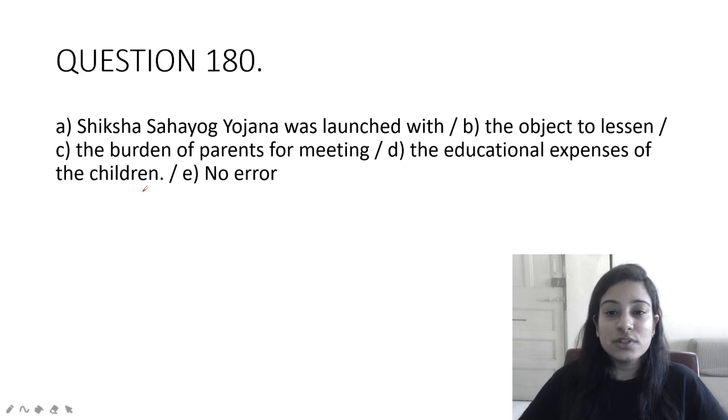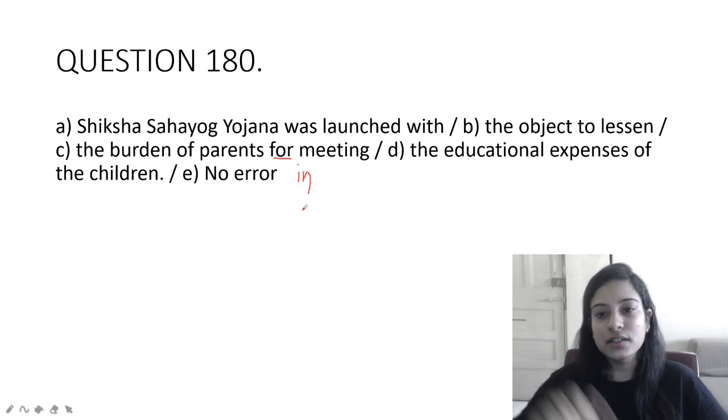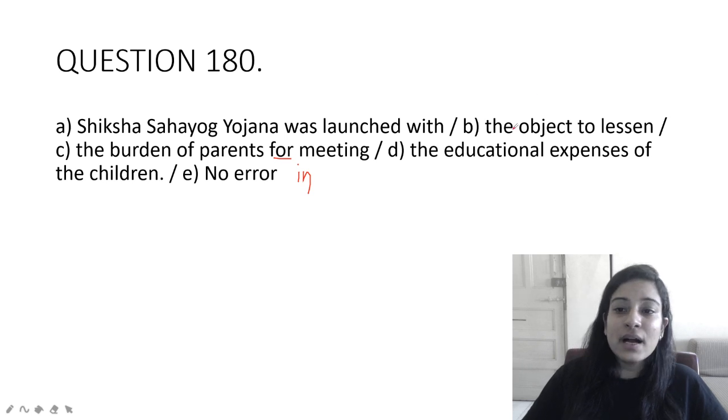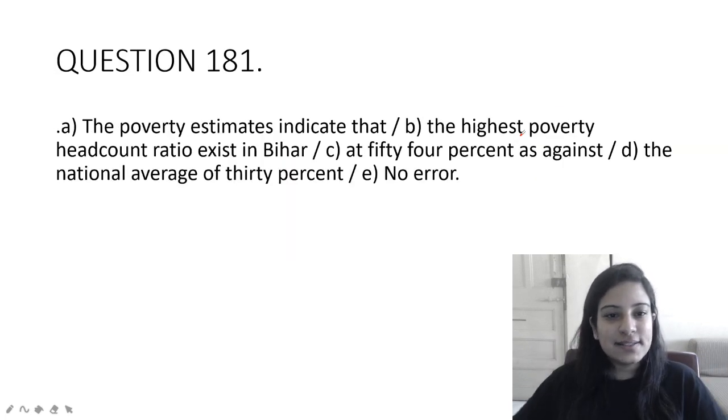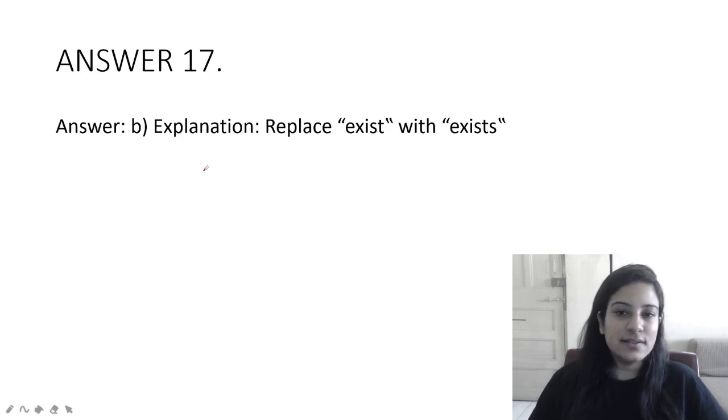Shiksha Sahayog Yojana was launched with the object to lessen the burden of parents for meeting the education expenses of the children. Our error is in option C. Burden in doing something, so burden in meeting the educational expenses. Object means aim or objective, that is correct.